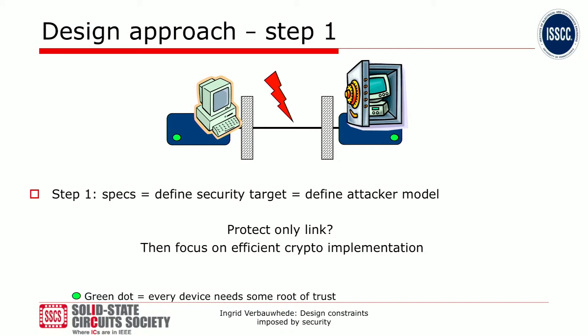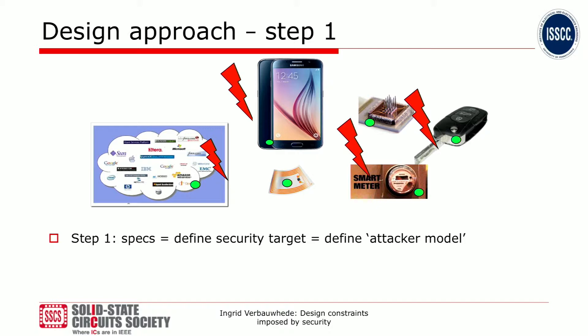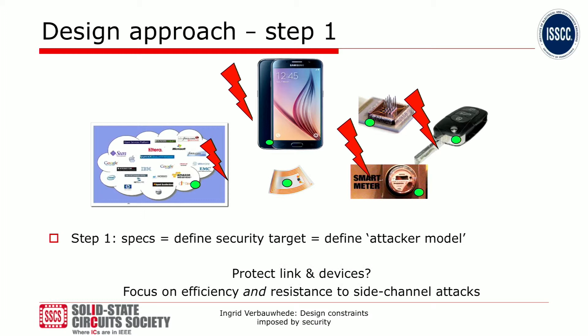The attacker model changes depending on the circumstances. Here is an example of the current situation with a bunch of IoT devices. They might talk to your phone; they might talk to the so-called cloud. They might all have some secrets in there, and here the attacker model becomes way more complicated. We want to protect both the links but also the devices themselves, meaning implementations need to resist side channel attacks — power attacks, EM attacks, laser attacks, fault attacks, software attacks — all of them.